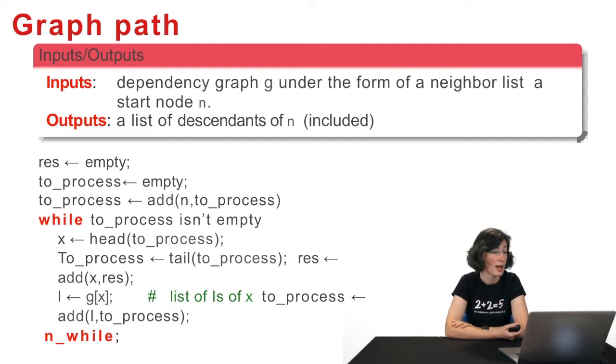You have several variables. The first variable is res that will be the result, initialized as empty. to_process is a temporary variable. It's all I have to process. I initialize as empty, then I add N in it. Since N is the initialization, what do I have to process? I need to process N for now. Then, I look at the to_process variable. That can be represented with several different data structures, by the way. As long as it's not empty, I take a value out of this list or data structure. I extract it completely. I retrieve X and to_process is the previous to_process without this X variable. I add X in the result since I'll depend on X. Then, I add all the children of X to the list of things to_process.